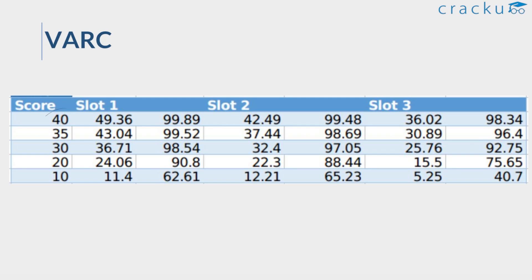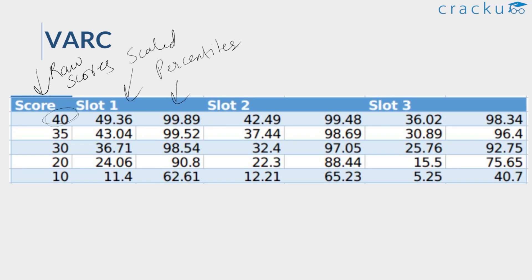We can see that through this table. These are the raw scores, these are your scaled scores, and these are the respective percentiles. If you had a raw score of 40 in Slot 1, your score was scaled up to 49.36, and the percentile was 99.89. So there was a huge gap between the raw score and the scaled score for the highest scores.